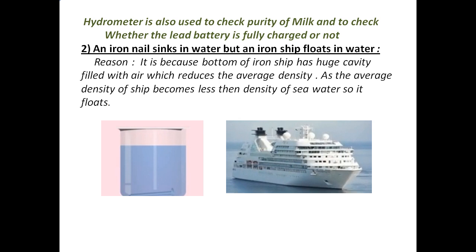A hydrometer is also used to check the purity of milk and to check whether the lead battery is fully charged or not — this battery is mostly used in vehicles and four-wheelers. The second application: an iron nail sinks in water, but an iron ship floats in water. The reason is that the bottom of an iron ship has a huge cavity filled with air, which reduces the average density. As the average density of the ship becomes less than the density of sea water, it floats.